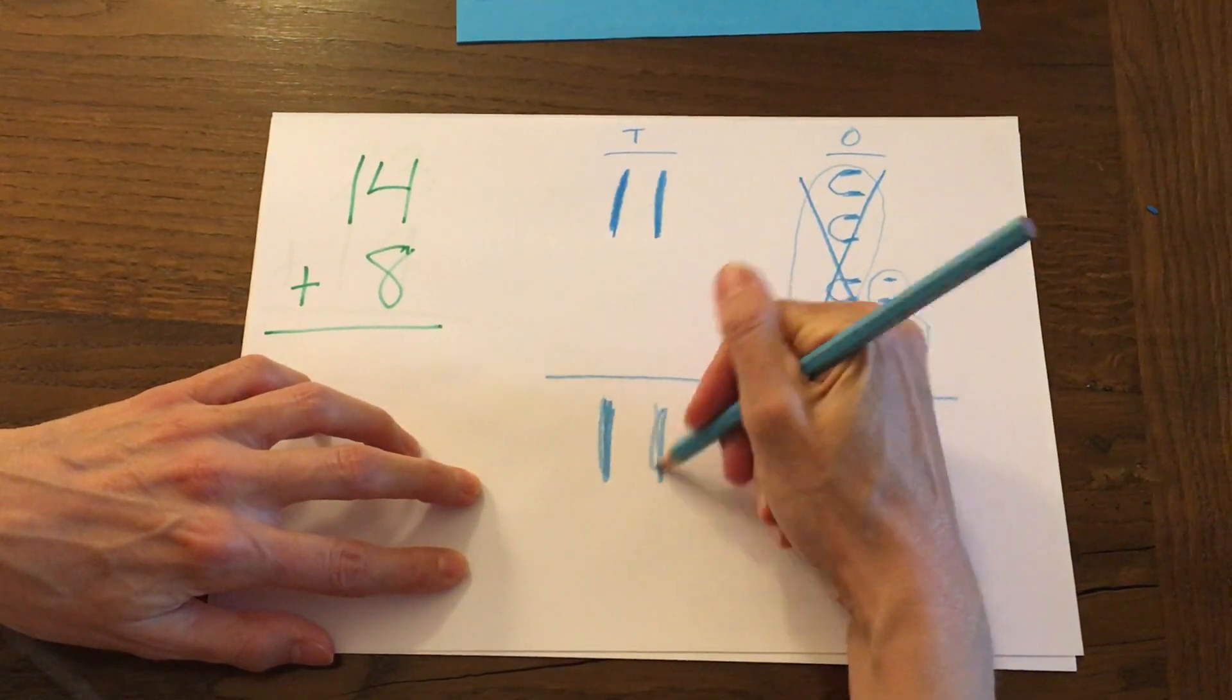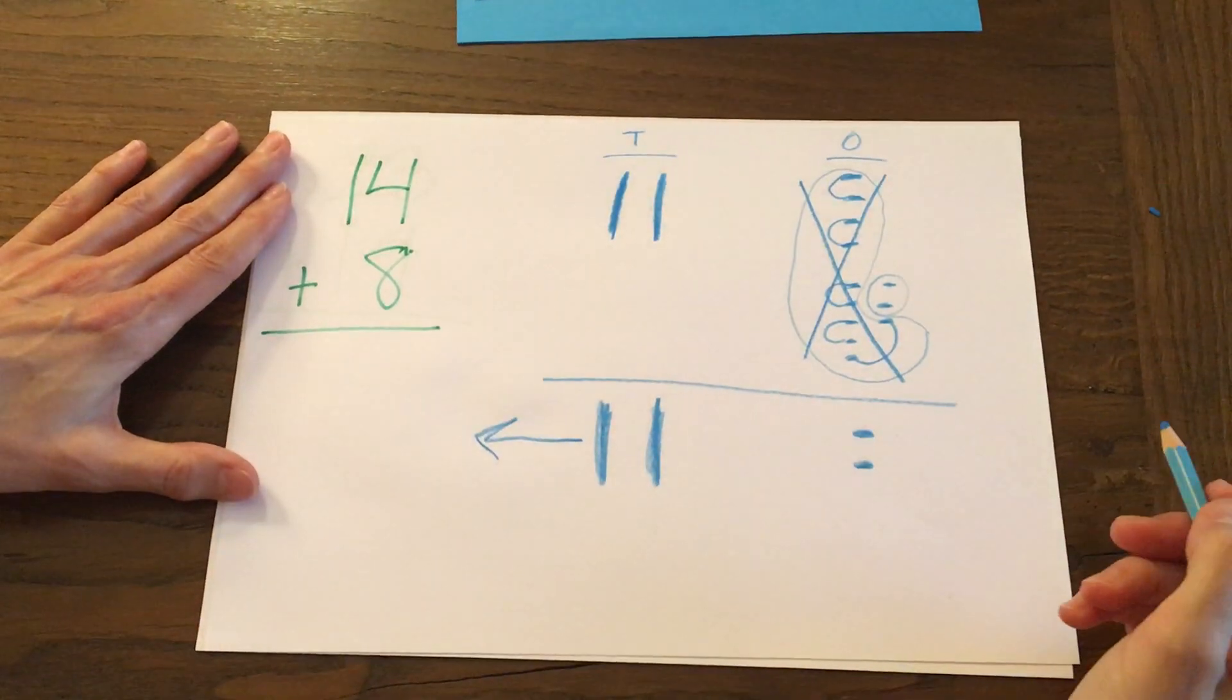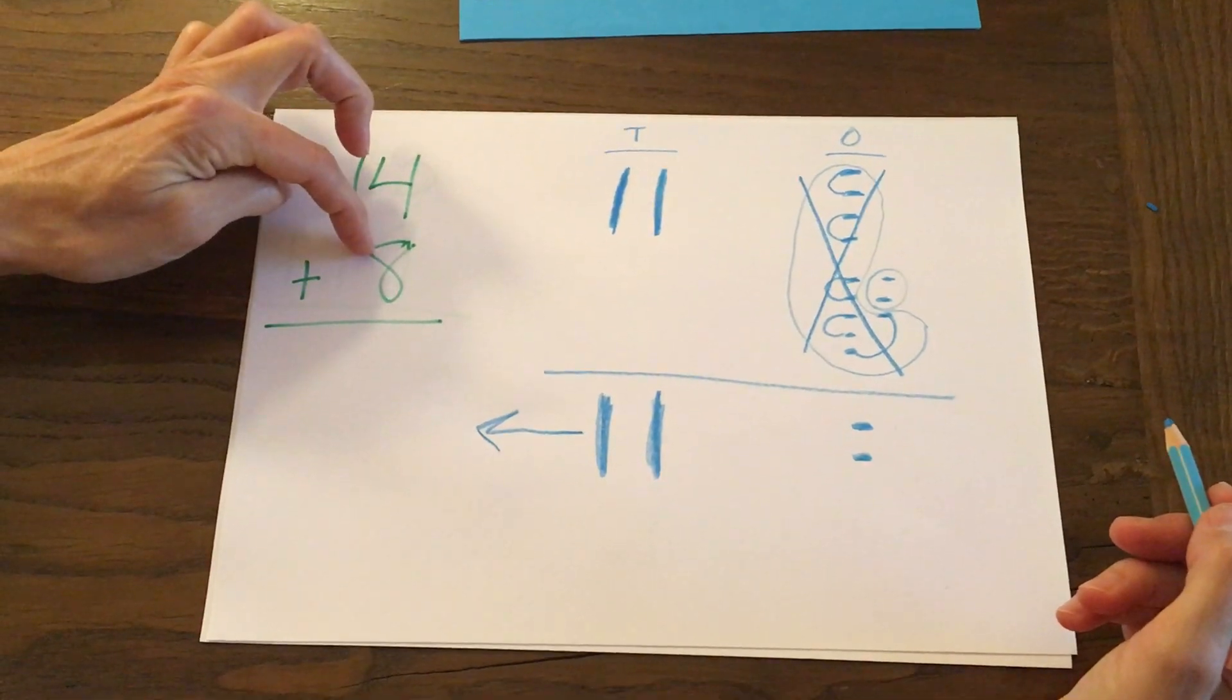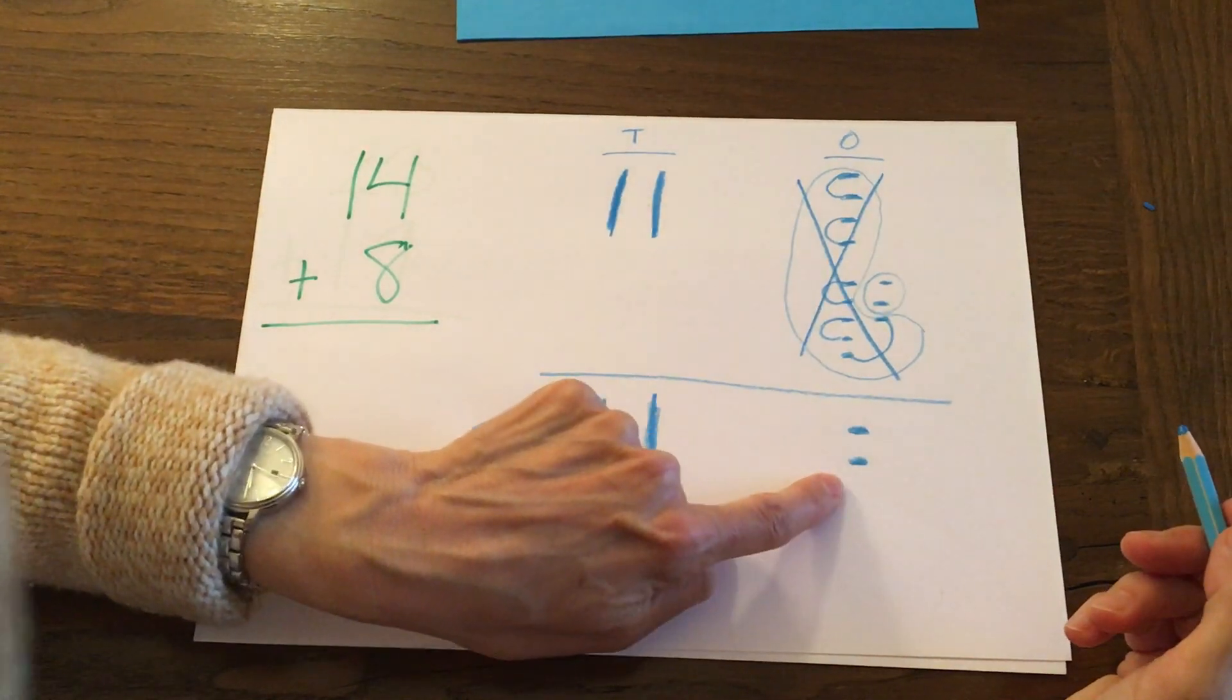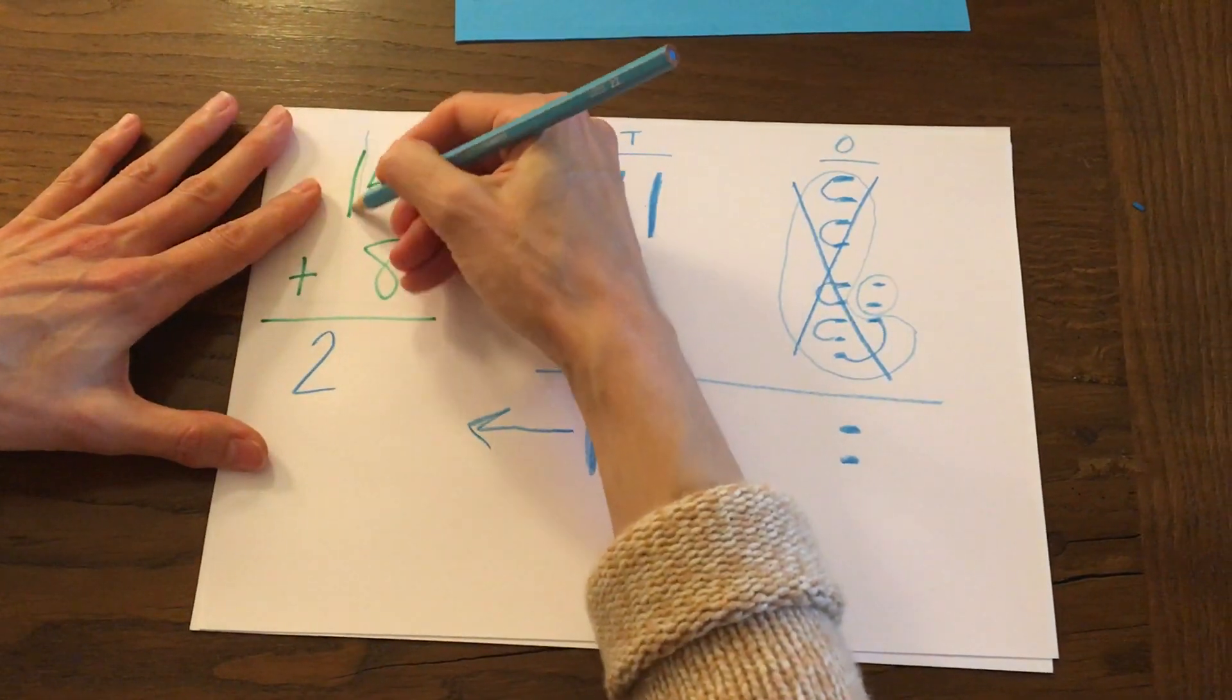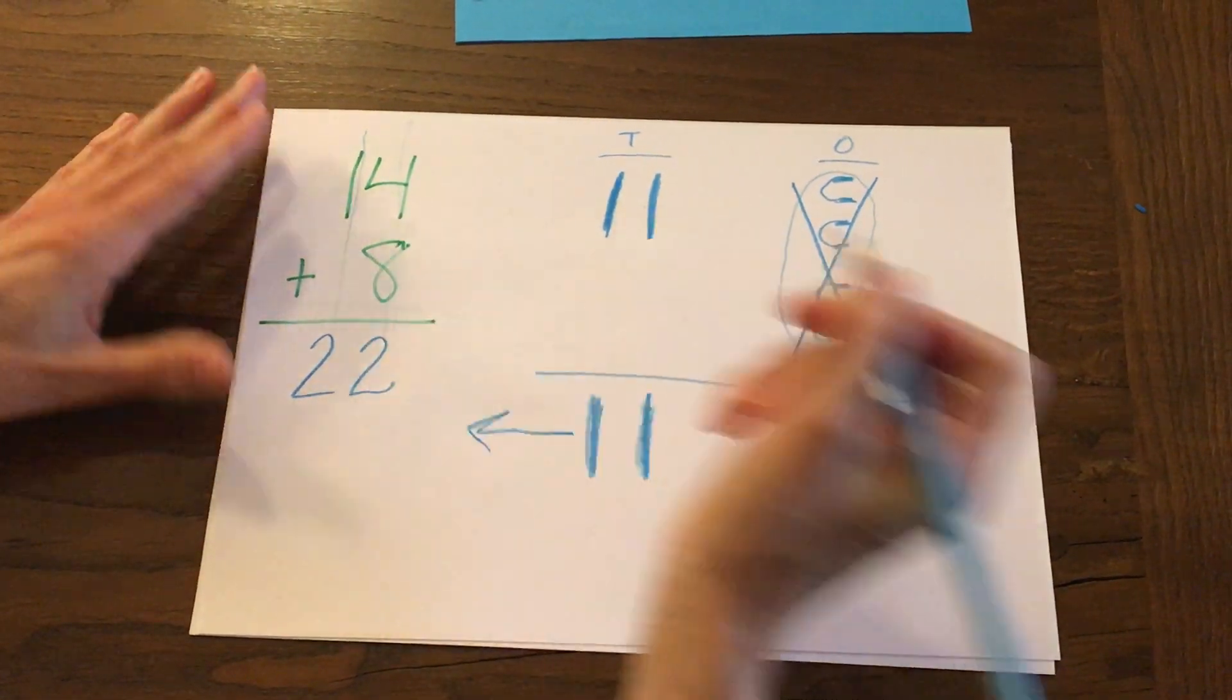Let's turn those drawings into numbers. 14 plus 8 equals 10, 20, 21, 22. Make sure you write your numbers below the other numbers. 22.